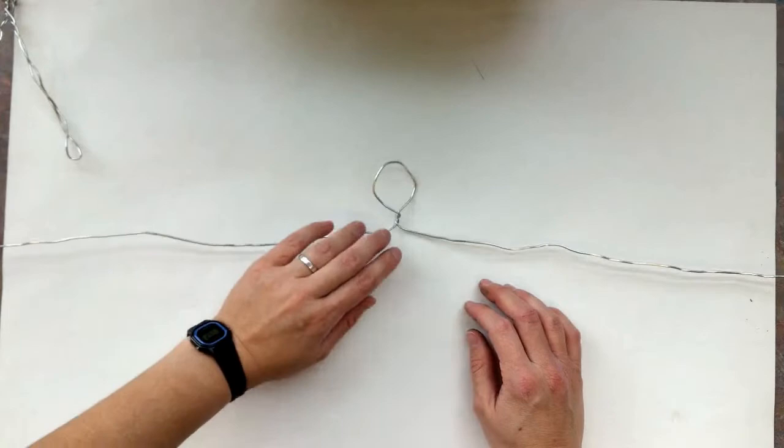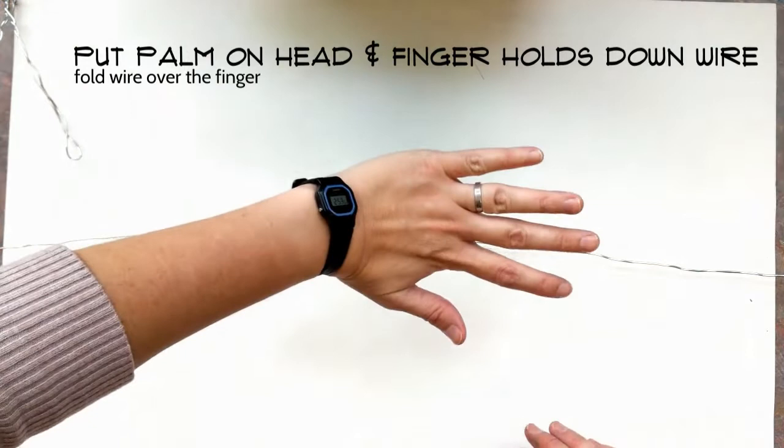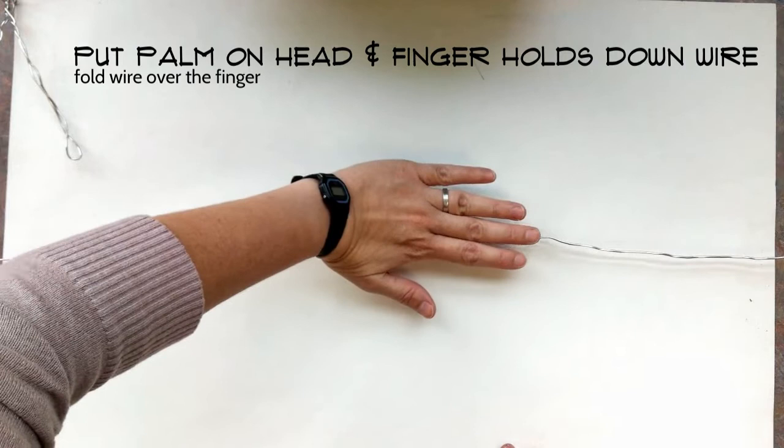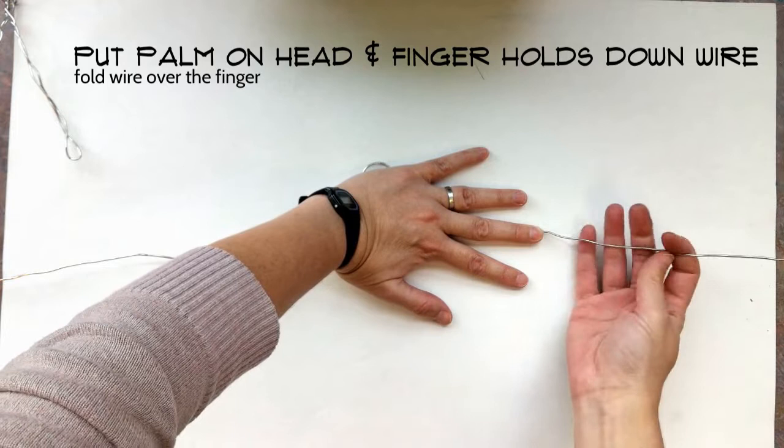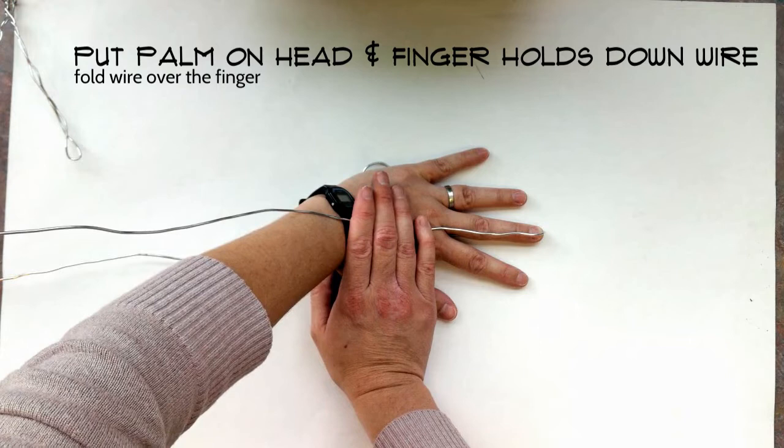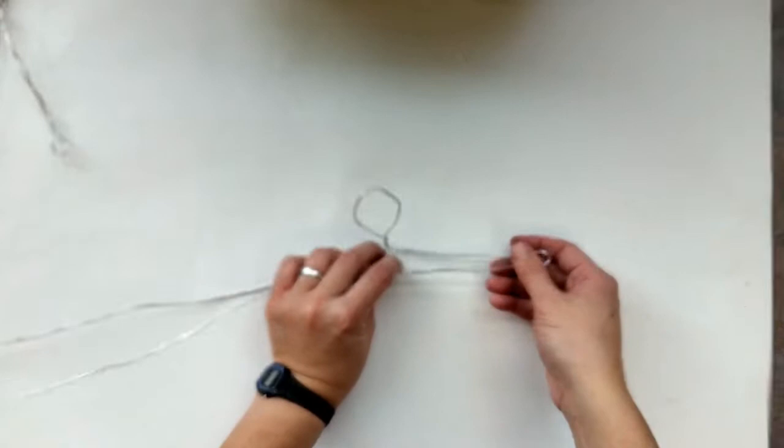Now the way I like to do it is I like to put the palm of my hand and smush the hand down and I'm going to line up my middle finger on the wire. And then I'll take the wire and bend it back over my middle finger. Then I will move my middle finger out of the way so it kind of looks like this.